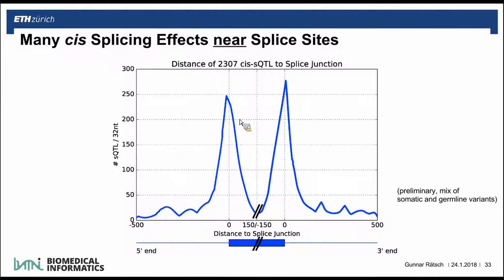The cis splicing effect shows that when you have a somatic or germline variant close to an exon boundary, it can affect the splicing of that specific exon. The distribution of associated variants shows that even variants maybe 100 nucleotides away can have a significant effect on splicing — it's not only the first two nucleotides of the intron, the AG or GT, that affect splicing, but a much wider region of the intron that influences splicing.